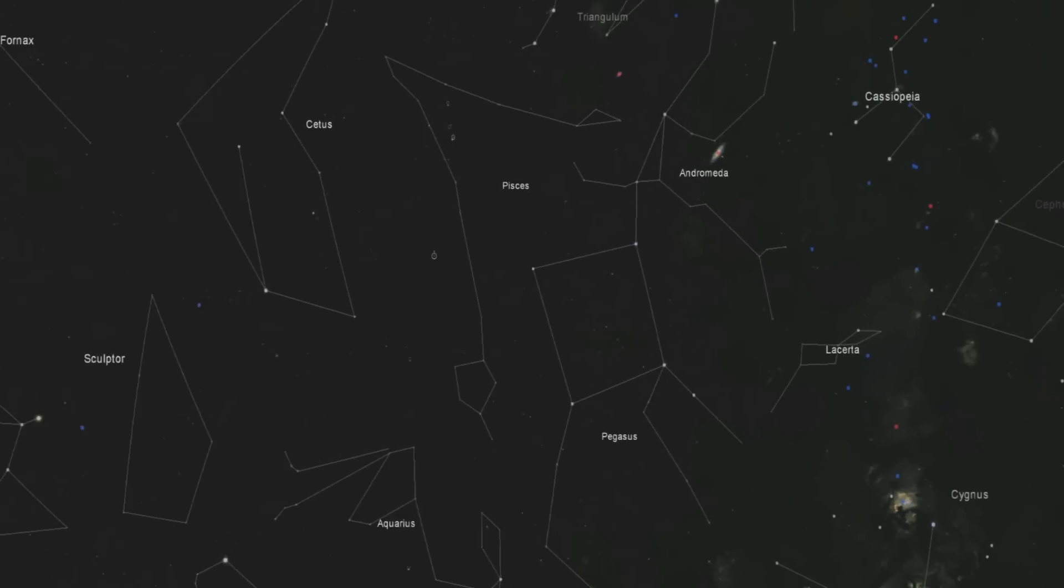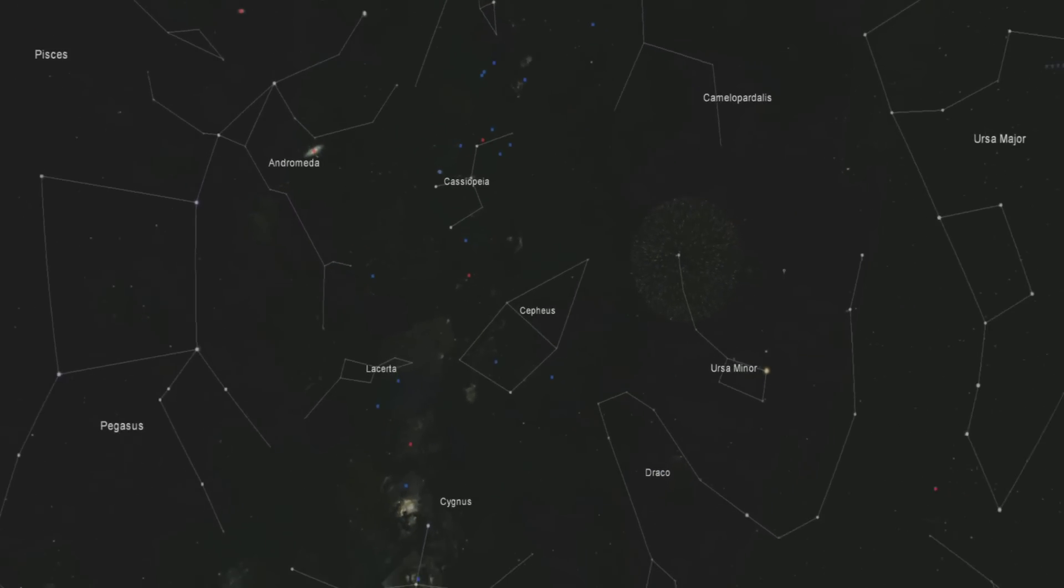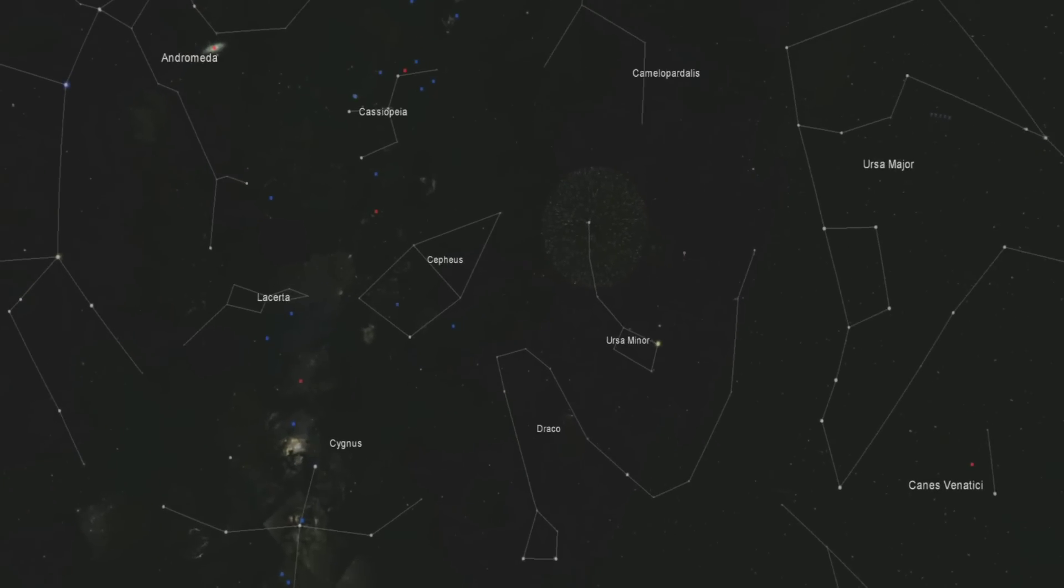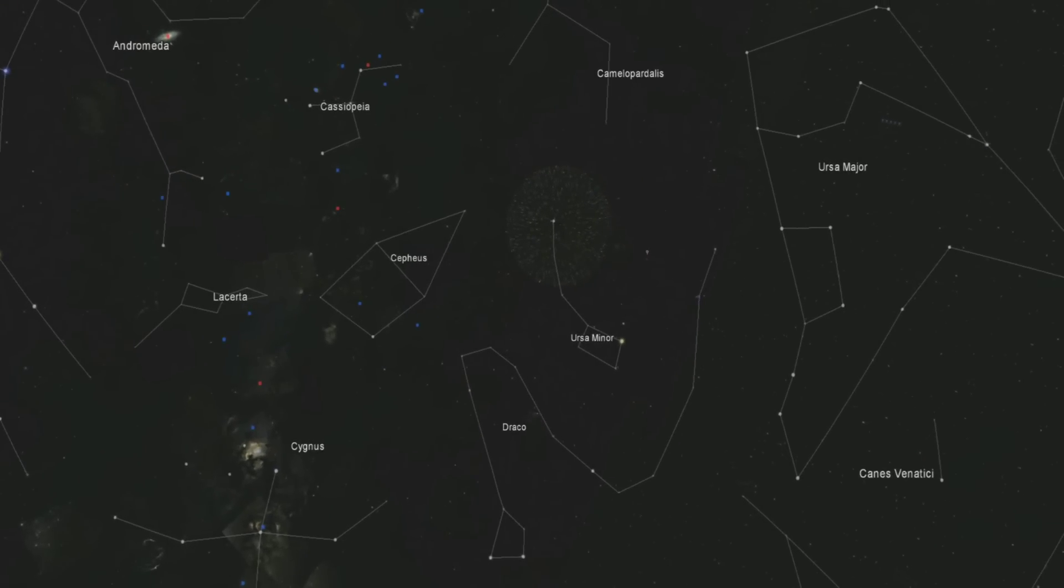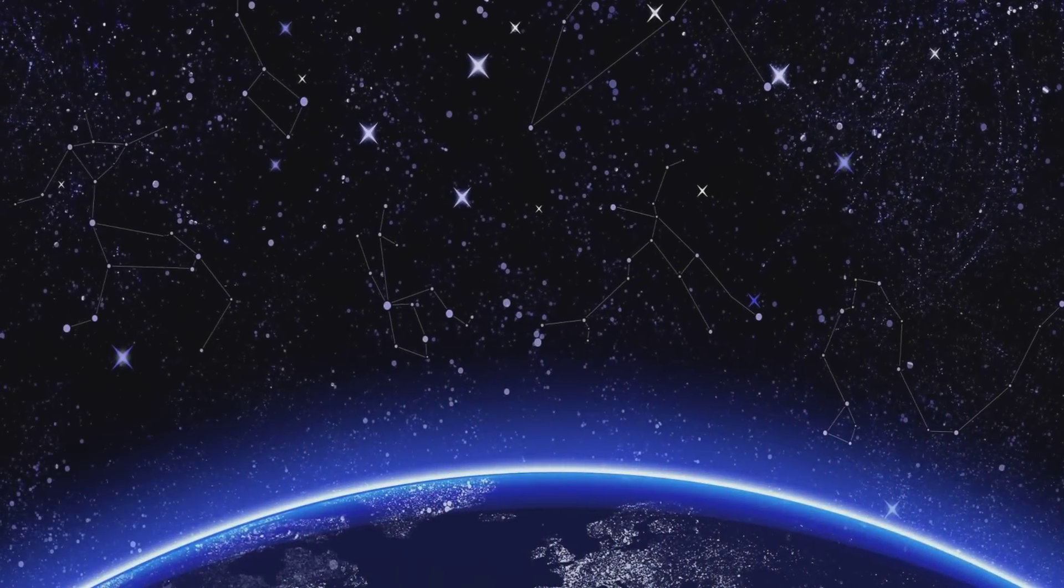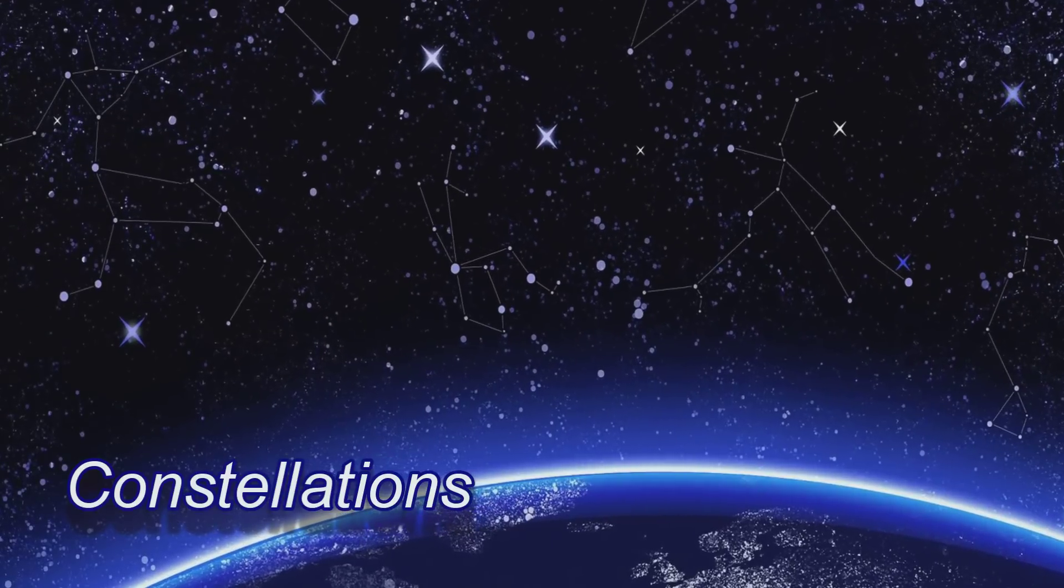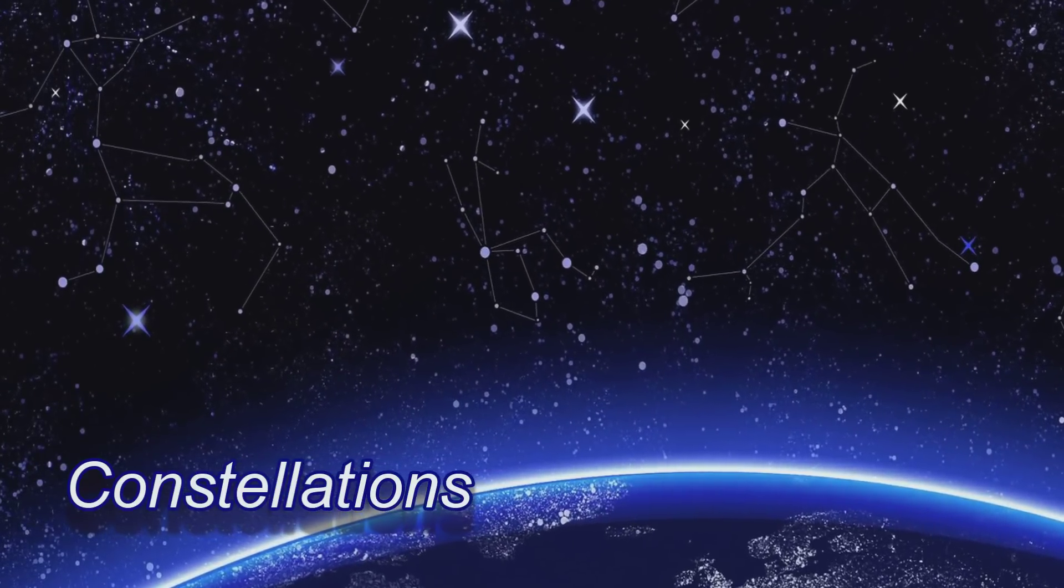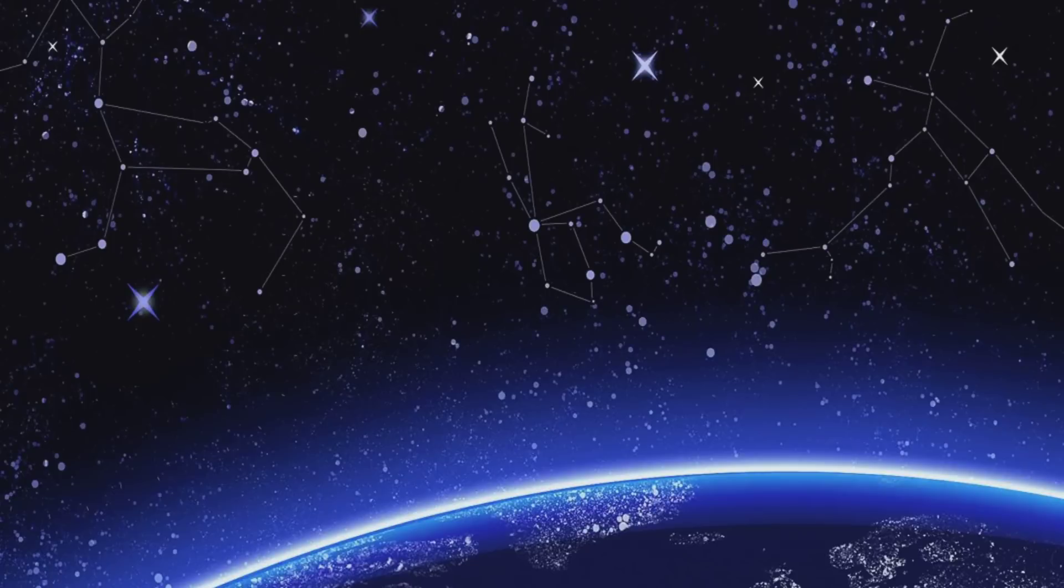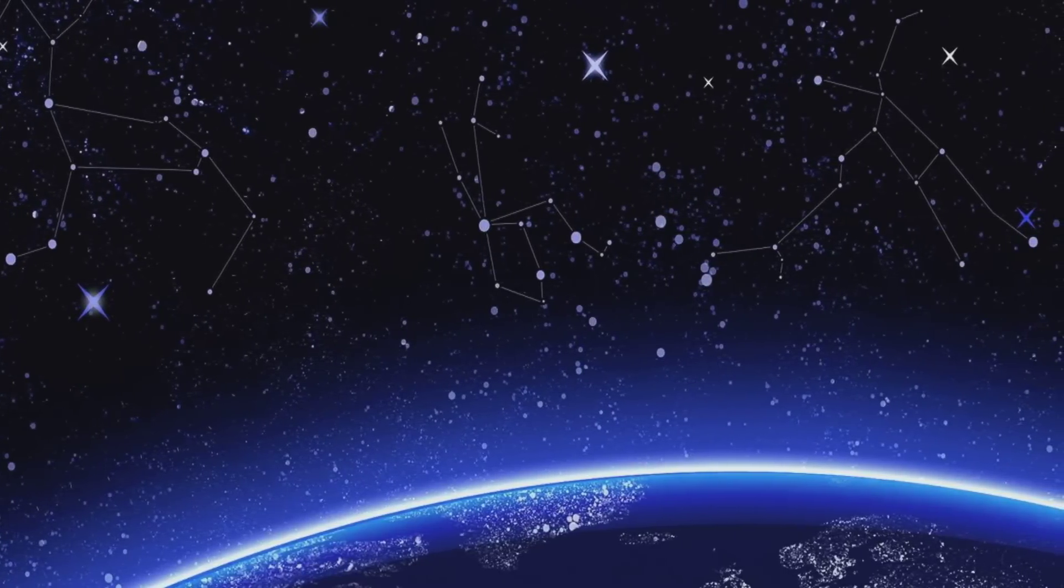Ursa Minor is a small constellation located in the northern hemisphere. Constellations are a group of stars forming a pattern that is traditionally named after its apparent form or identified with a mythological figure. The purpose for the constellations is to help us tell which stars are which.